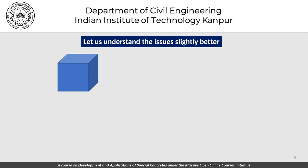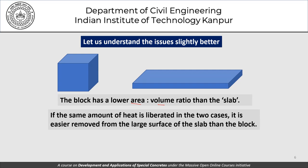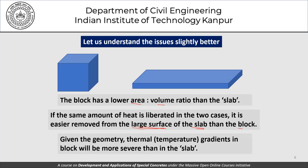Consider a cubical block compared to the same volume cast as a slab. The block has a lower area-to-volume ratio than the slab. If the same amount of heat is liberated in both cases, it is more easily removed from a cast with a large surface area — that is, a slab — than from a block. Given the geometry, the thermal or temperature gradients in the block will be more severe than in the slab.